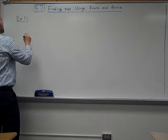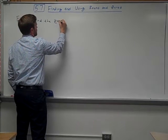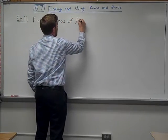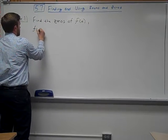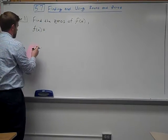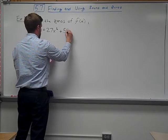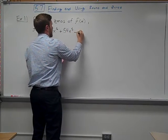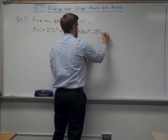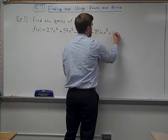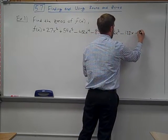Example one is going to ask you to find the zeros of f(x). Skip down to the next line and write out f(x), which is defined as: 27x⁶ + 54x⁵ − 432x⁴ − 856x³ + 16x² − 128x − 256.